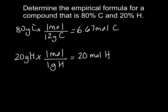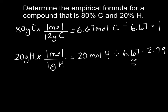Looking at the two answers — 6.67 and 20 — whichever is smallest, I divide both numbers by that amount. Dividing both by 6.67 gives me 1 for carbon, and 20 divided by 6.67 gives me 2.99. We need whole numbers, so I round 2.99 to 3. The only place to round is at this final step — do not round at the mole step, as rounding too early gives the wrong ratio. Make sure you have at least 2 or 3 decimal places in your mole values. This tells me I have 1 carbon and 3 hydrogens, so my formula is CH3.